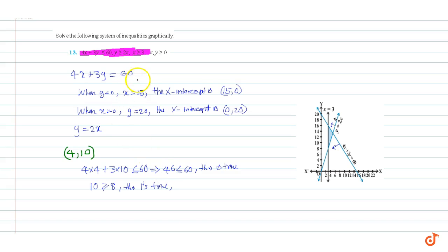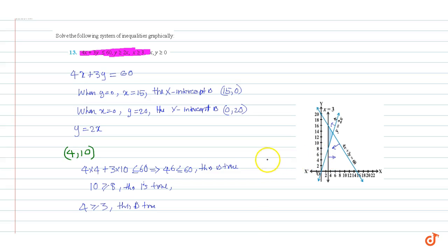Now we will consider the third inequality, x greater than or equal to 3. Since 4 is greater than or equal to 3, the feasible region lies to the right of the line x equals 3, in this direction. The fourth and fifth inequalities tell us that the feasible region lies in the first quadrant.